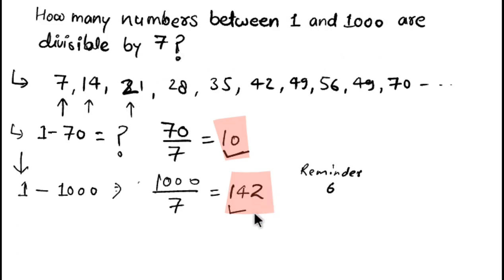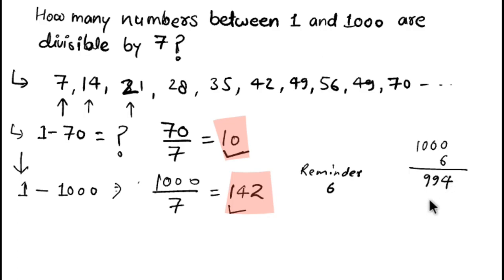If the question asks what is the greatest number between one and one thousand which is divisible by seven, I look at the division: 1000 divided by 7 gives 142 completely with remainder 6. I subtract this remainder six from 1000 and get 994. So the greatest number between one and one thousand which is completely divisible by seven is 994. That's all for today, bye bye and take care.